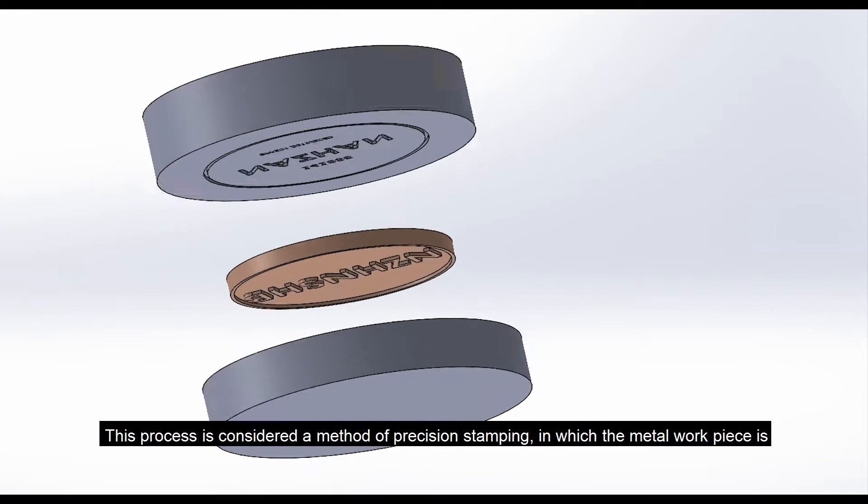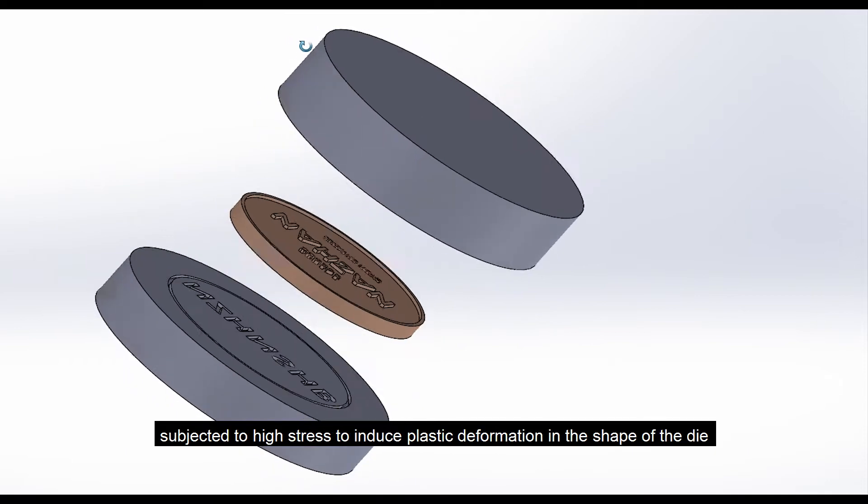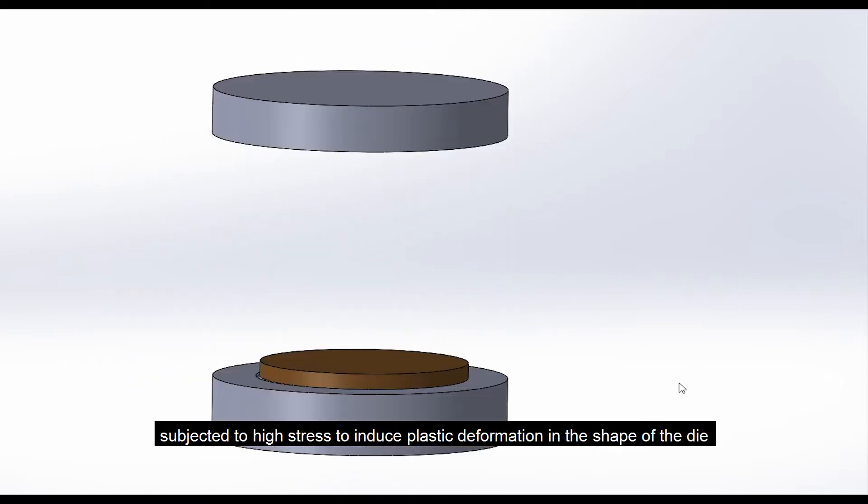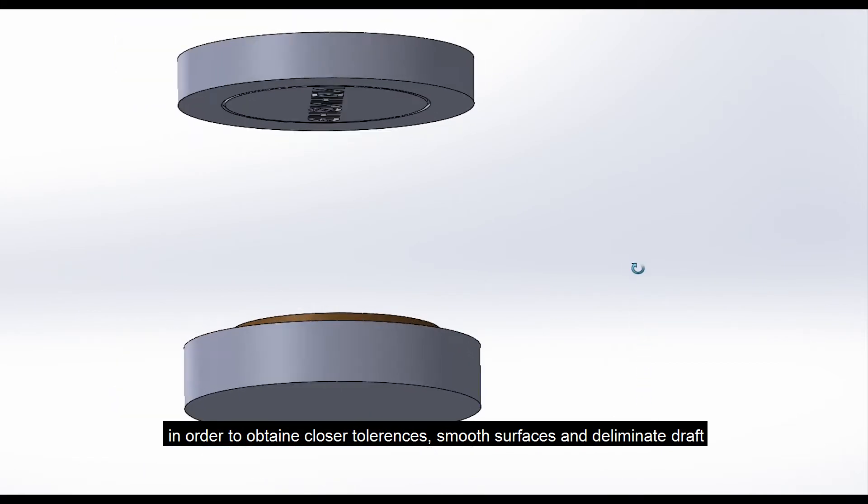This process is considered a method of precision stamping, in which the metal workpiece is subjected to high stress to induce plastic deformation in the shape of the die, in order to obtain closer tolerances, smoother surfaces and eliminate draft.